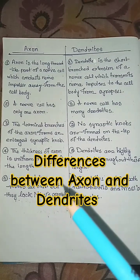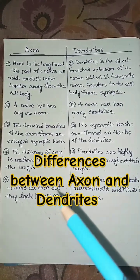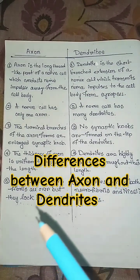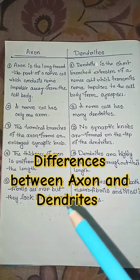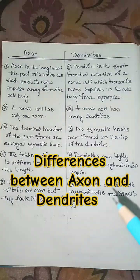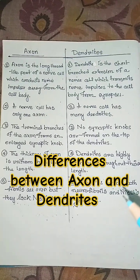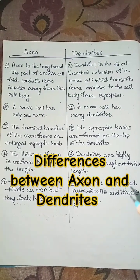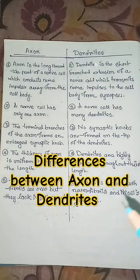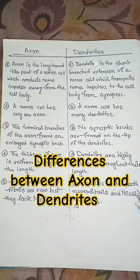Axon contains neurofibrils all over but they lack nasal granules. Dendrites contain both neurofibrils and nasal granules.